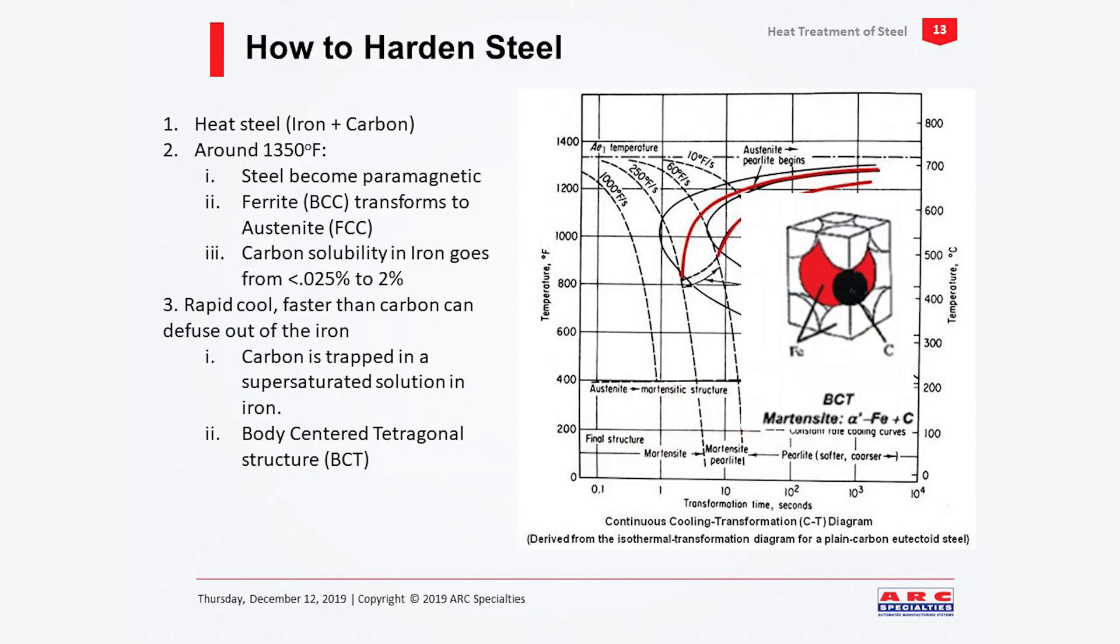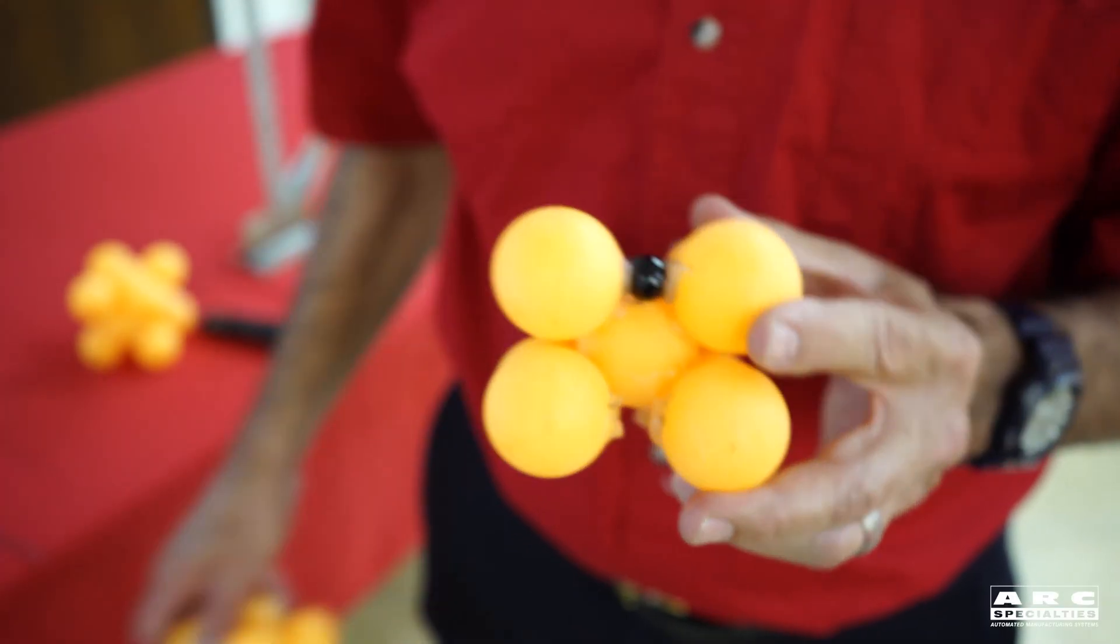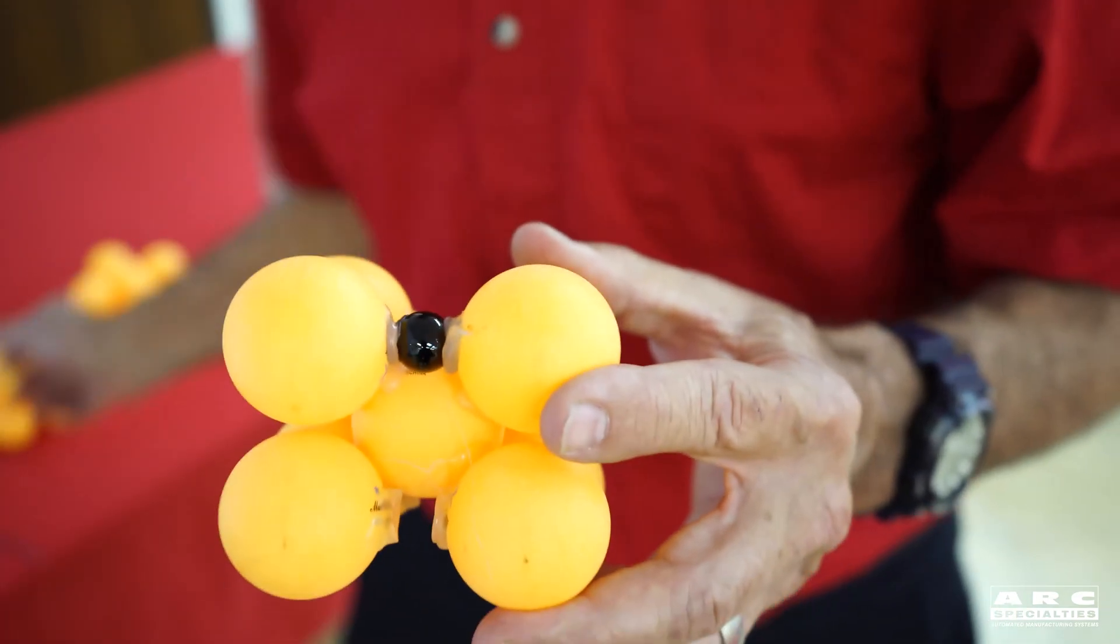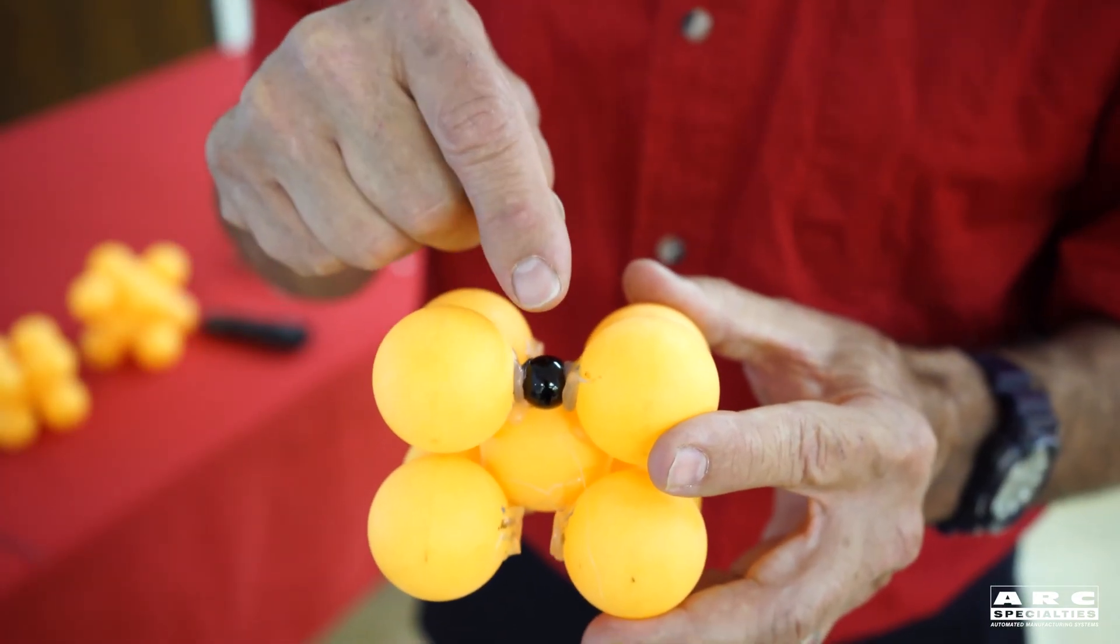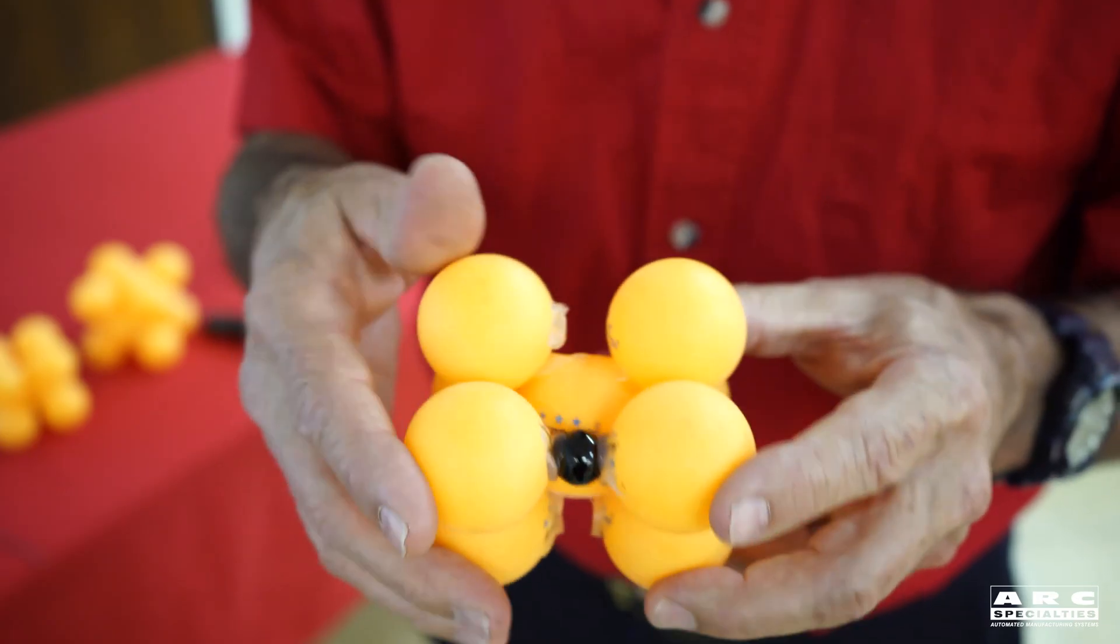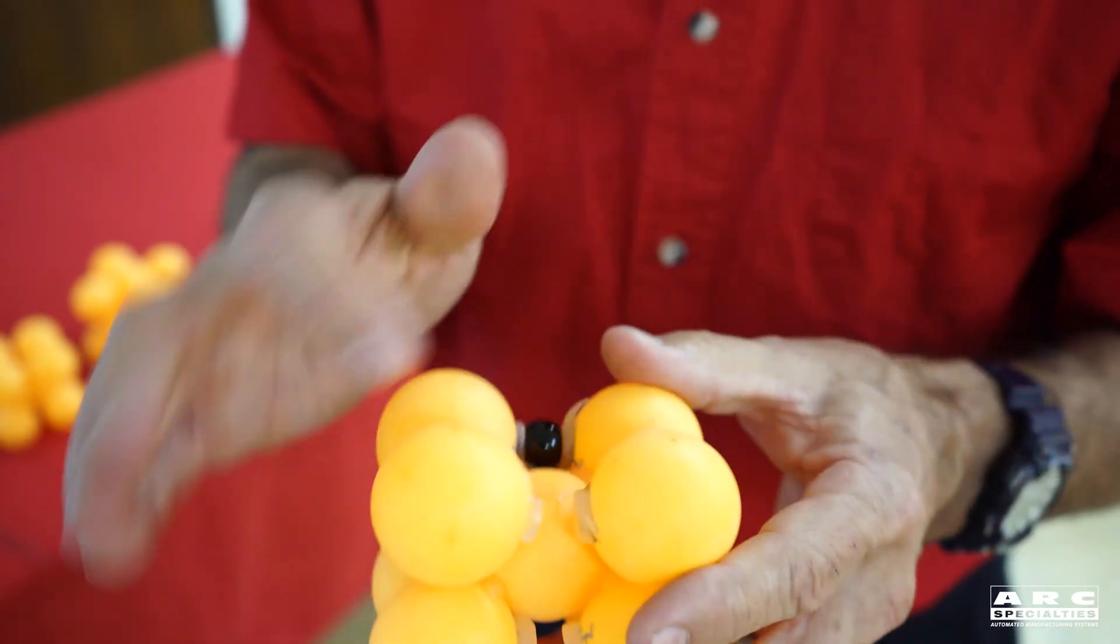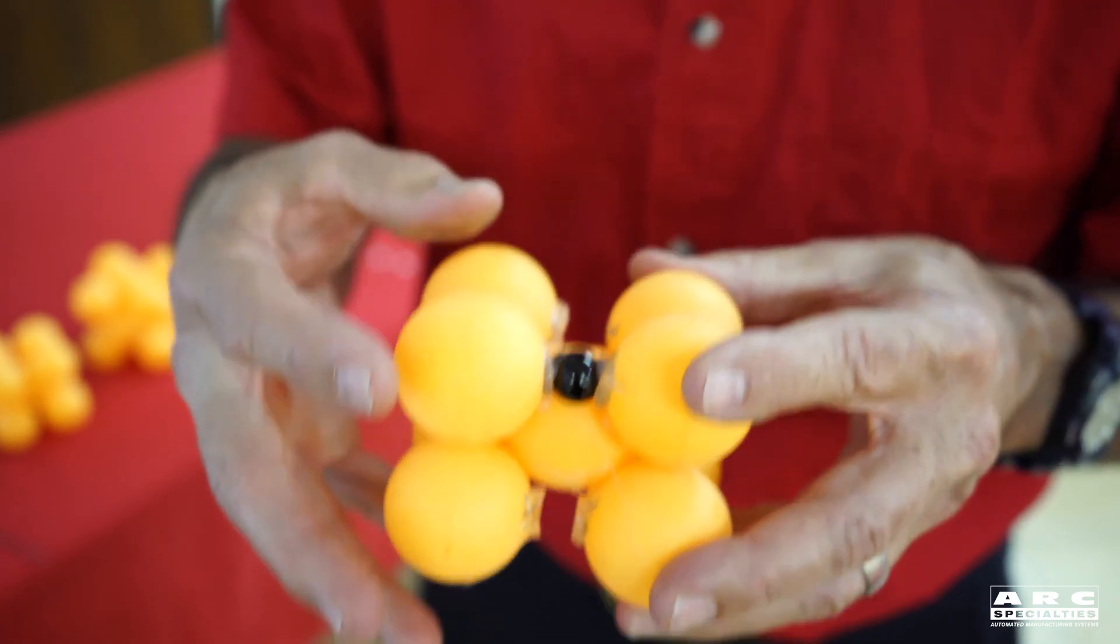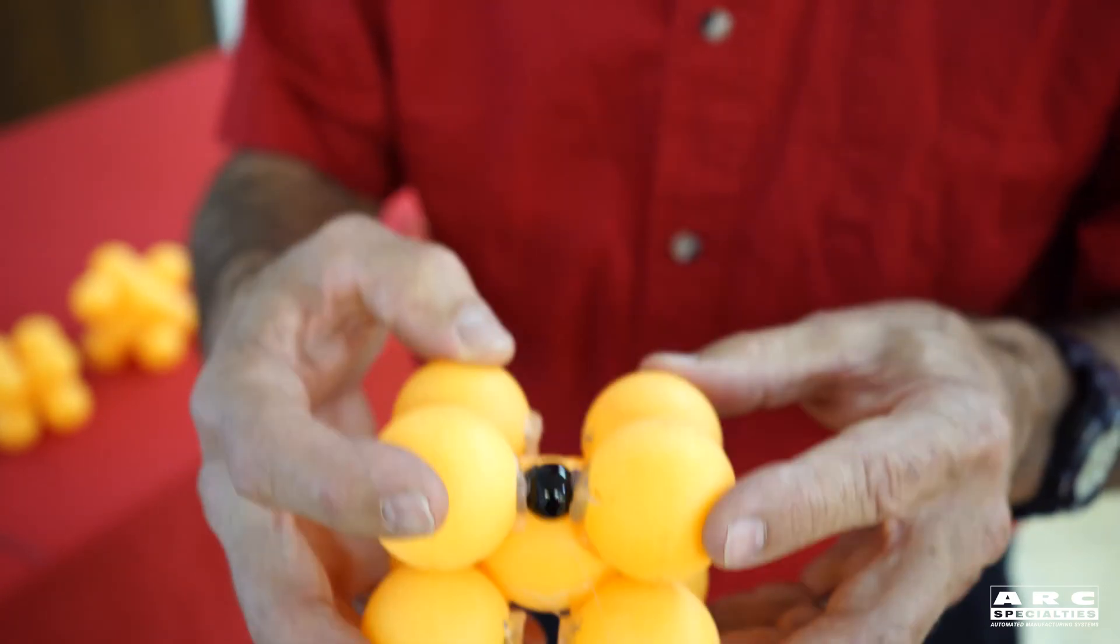Then you rapidly cool. You want to cool it faster than the carbon can diffuse back out. So now what you're doing is you're trapping this carbon in the matrix in a super-saturated solution of carbon in iron. What you're doing is you're creating another structure. This is a body-centered tetragonal structure, and this is martensite. This is also body-centered cubic, much like the ferrite, except now we have a super-saturated solution of carbon in iron. So this one carbon atom distorts the matrix. So instead of a cube, we have a tetrahedron. We have the same four atoms here, four atoms here, and one in the center, but the whole thing is elongated. This stresses the matrix, makes the material harder and stronger.